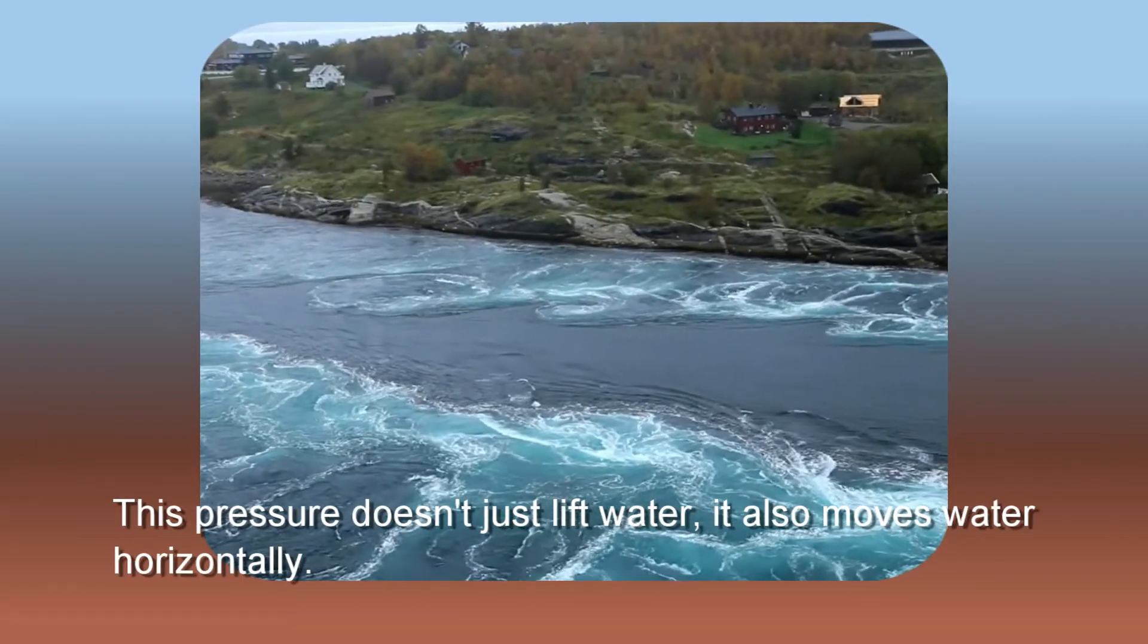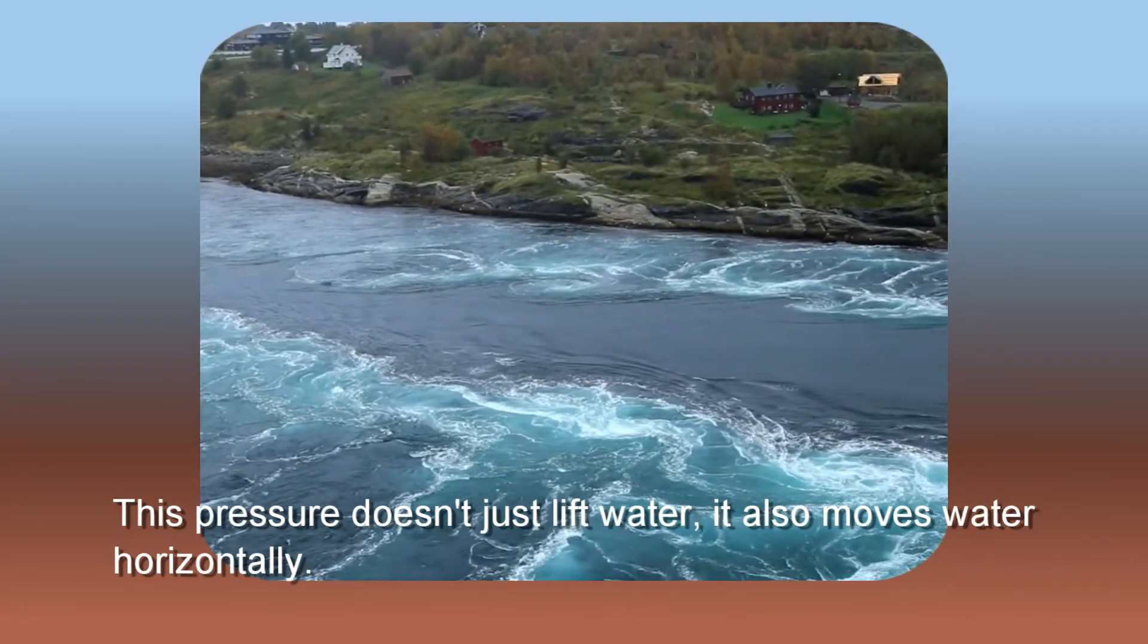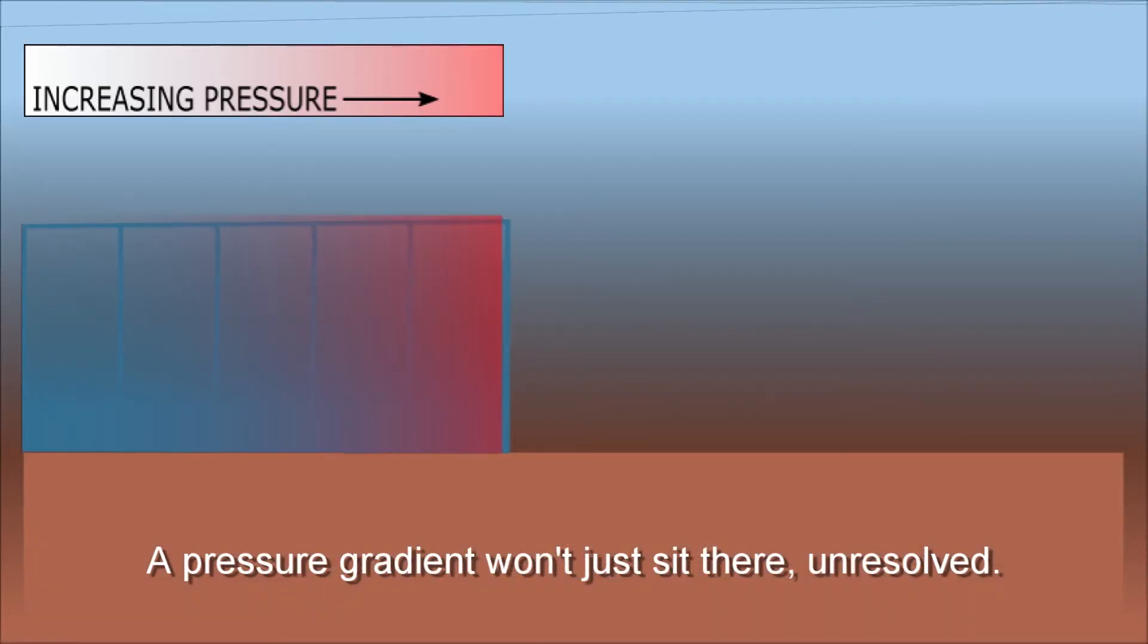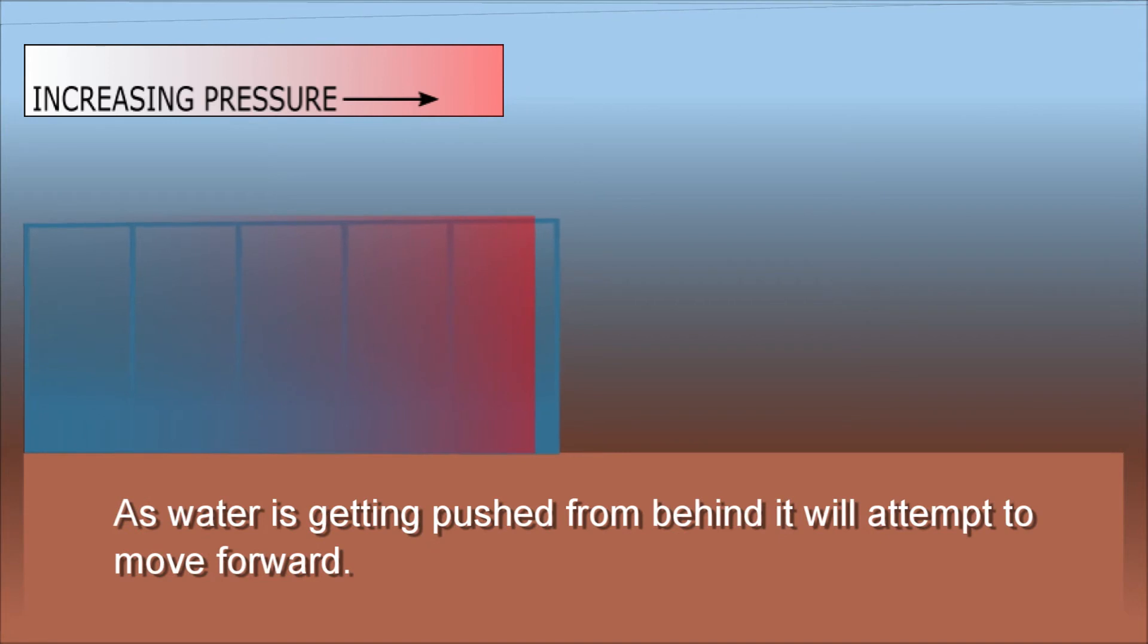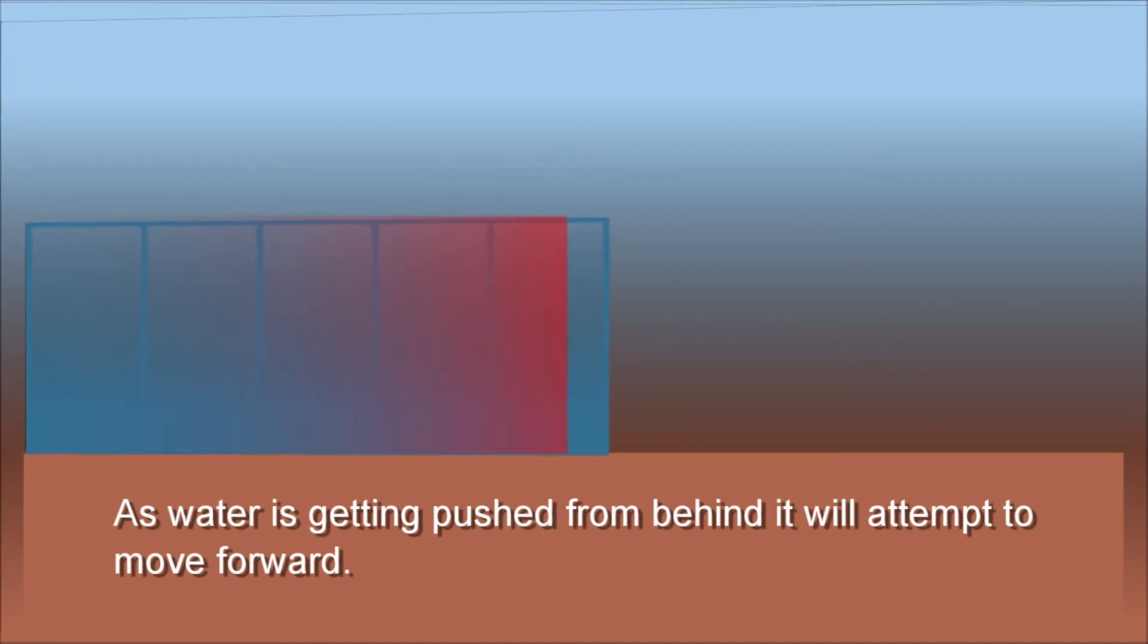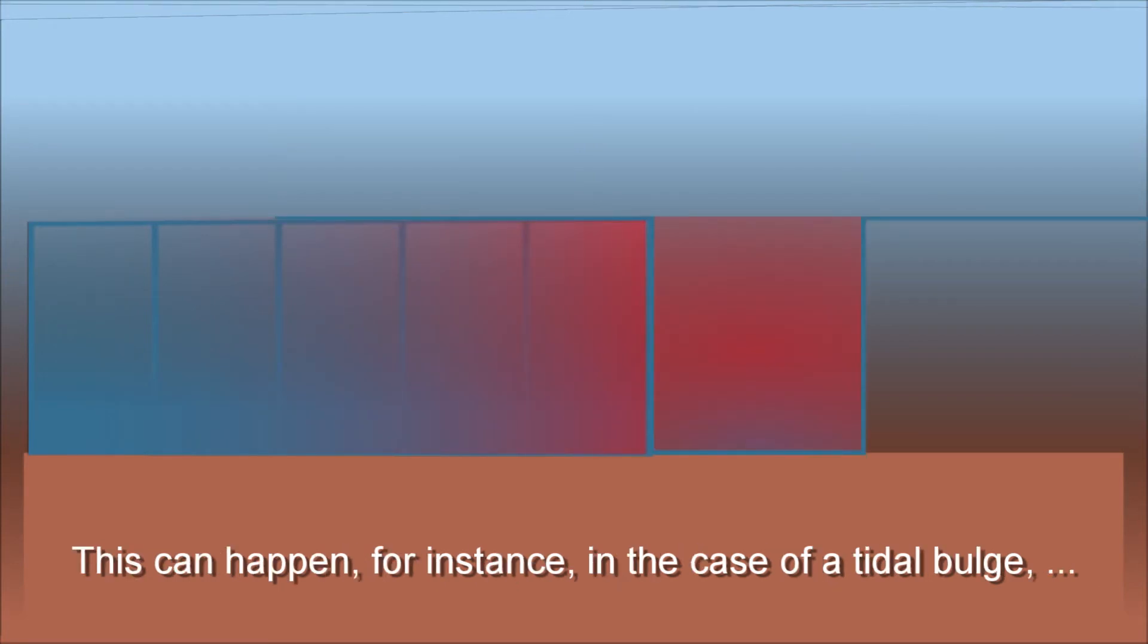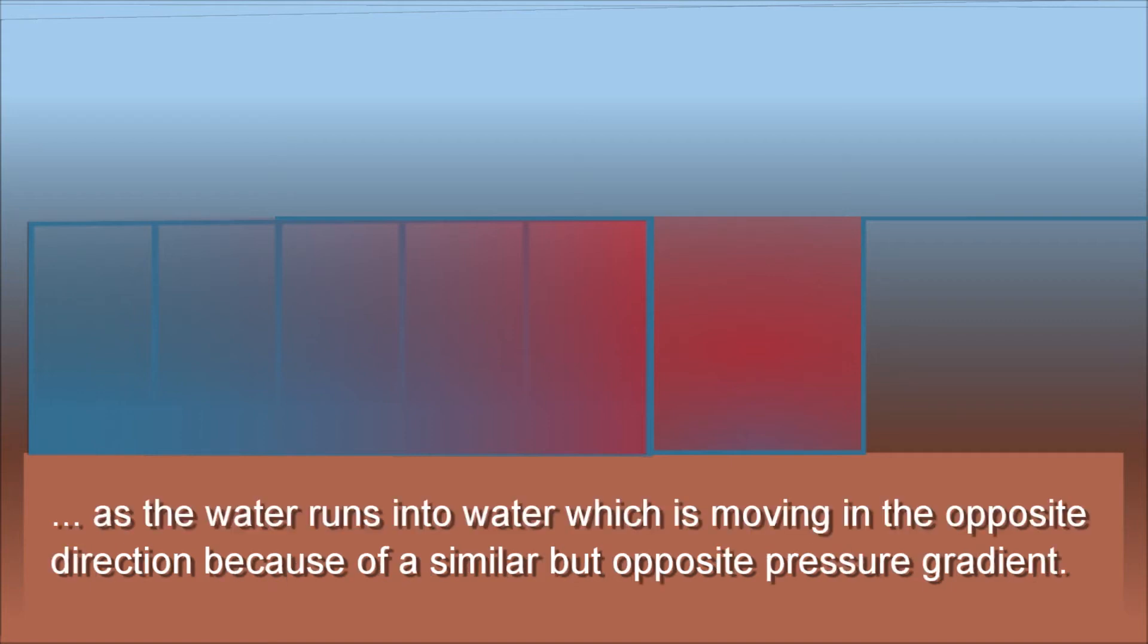This pressure doesn't just lift water, it also moves water horizontally. A pressure gradient won't just sit there unresolved. As water is getting pushed from behind, it will attempt to move forward. It will do so until it's stopped by at least equal pressure. This can happen, for instance, in the case of a tidal bulge, as the water runs into water which is moving in the opposite direction because of a similar but opposite pressure gradient.